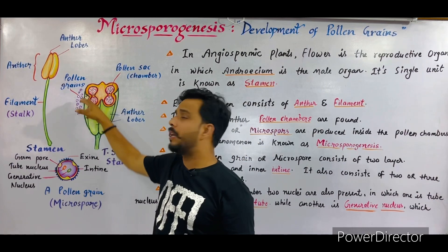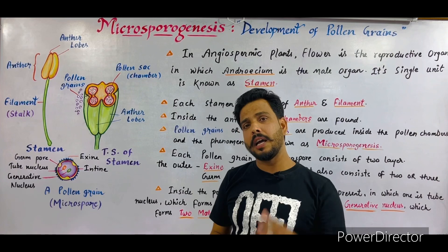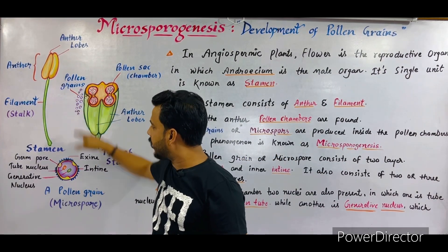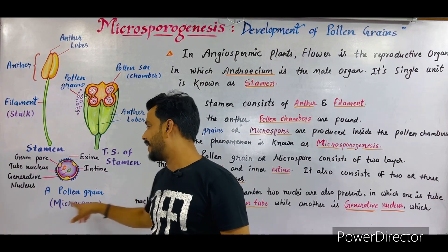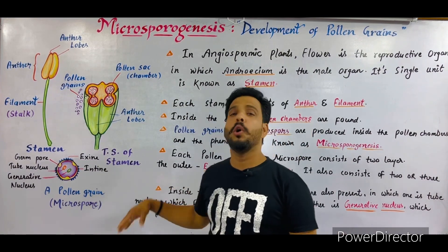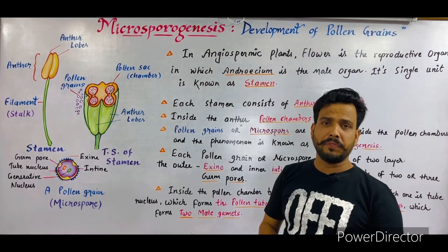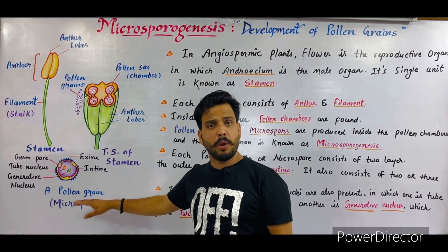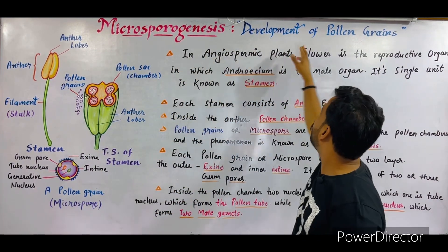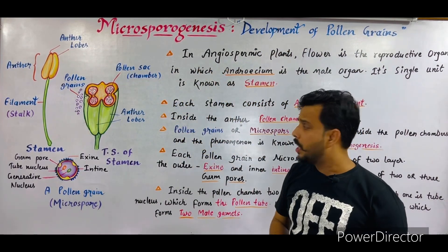Inside the pollen chamber, pollen grains are produced. Pollen grains are the male gametes and are also termed microspores. This single pollen grain is also known as a microspore, and the formation of microspores or pollen grains is termed microsporogenesis — the word itself means formation of microspores.